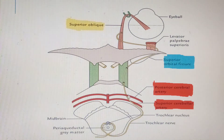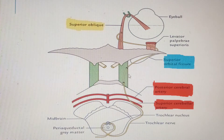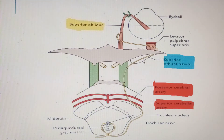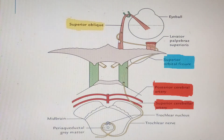Regarding its relations: just like the oculomotor nerve, it runs between the posterior cerebral artery above and the superior cerebellar artery below. It runs along the lateral wall of the cavernous sinus, passes through the superior orbital fissure into the orbit, runs superficial to the levator palpebrae superioris, and supplies the superior oblique muscle.